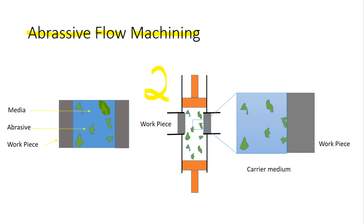In this figure you can see two sets of pistons — one on the top and one on the bottom. When piston one goes up, piston two also goes up, so the entire media moves up. Similarly, when piston one goes down, piston two comes down, so the entire media comes down. The abrasive particles suspended in the media rub on the workpiece and remove material.